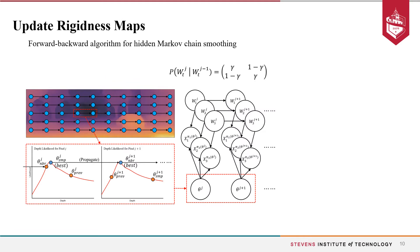For updating rigidness maps, we post a smoothness term on the 1D hidden Markov chain, and this can be efficiently solved using a forward and backward algorithm.